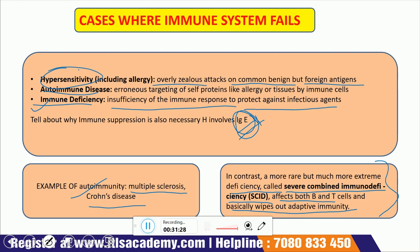This marks the end of the overview of the immune system. We have discussed the various branches of immunity, how the concept of immunity was generated, and the experiments which led to the discovery of immunoglobulins and modern immunological science. In future lectures we will discuss all these processes in greater detail. Thank you.